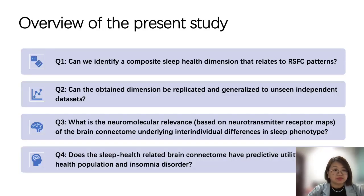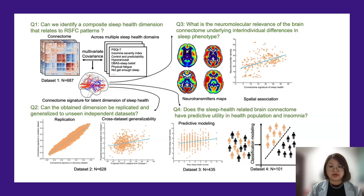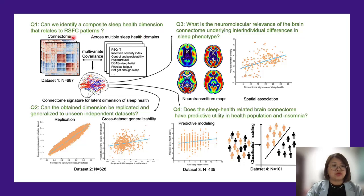To cover the research gap, the present study answers four research questions. The first question is: can we identify a composite sleep health dimension that relates to resting-state functional connectivity patterns? In order to answer this question, we used Partial Least Squares analysis, which I will elaborate on in later slides, to seek the multivariate covariance between resting-state functional connectivity and behavior measures across multiple sleep health domains.